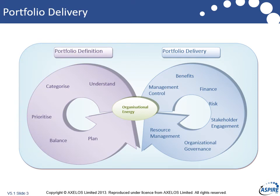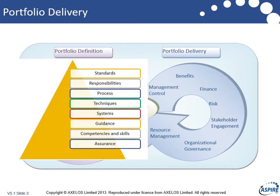So we've covered portfolio definition. Let's have a look at portfolio delivery and what we need to think about in terms of tools and techniques. For each of the seven areas identified in portfolio management and within P3O, it's more than just techniques we need to think about. Here's the model pulled from P3M3 that says what needs to be set out. For each of those seven areas — which are the seven perspectives in P3M3 — we need to define standards, responsibilities, and processes. This is where we've got to think about techniques: so what techniques do we need?